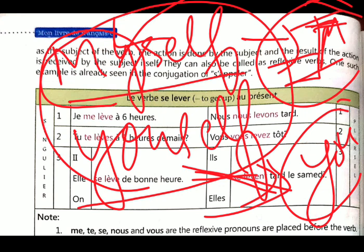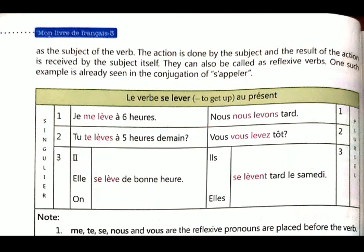So in English it is yourself, myself. In French, how do we say myself, yourself, themself? We add me with je, te with tu, se with il/elle, nous with nous, vous with vous.